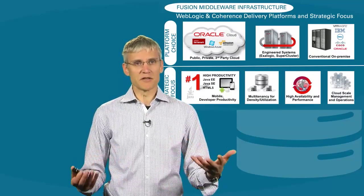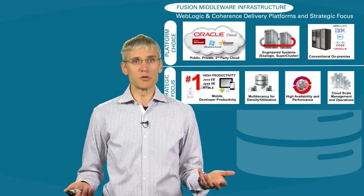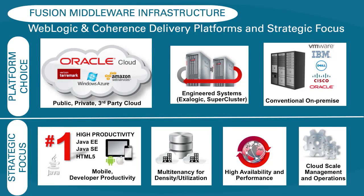Let's start out by setting the stage of where we're investing and how we're delivering Fusion Middleware Infrastructure. As you can see, we have a number of key delivery platforms and a number of focus areas when we invest in our infrastructure. We still run our product on-premise, and we have all those conventional hardware platforms — IBM, Dell, HP, Cisco, and of course Oracle — delivering enterprise-class commodity hardware on x86.